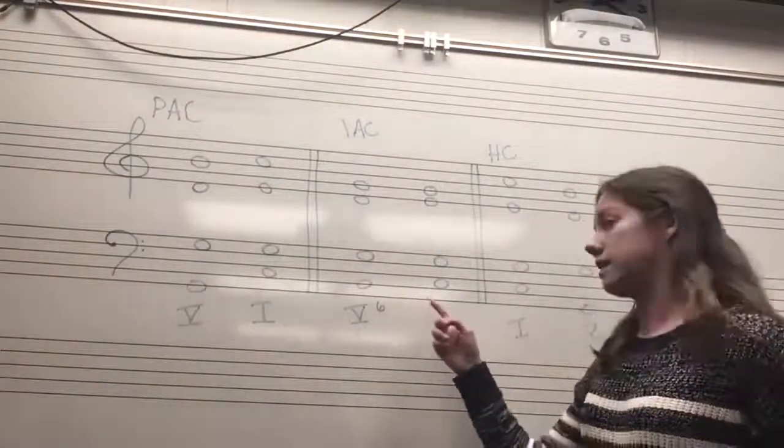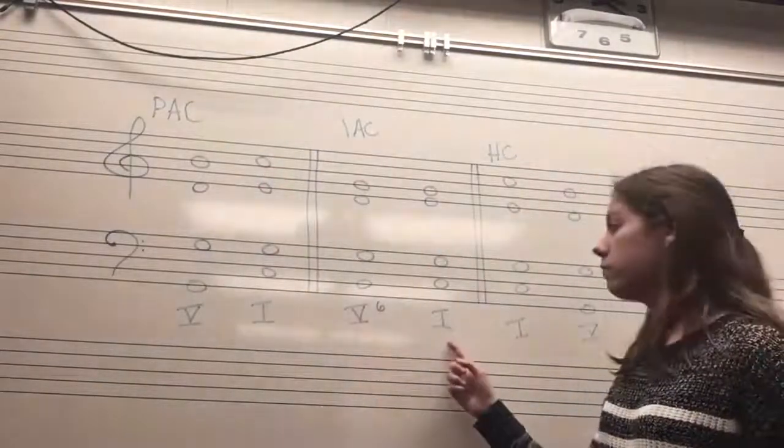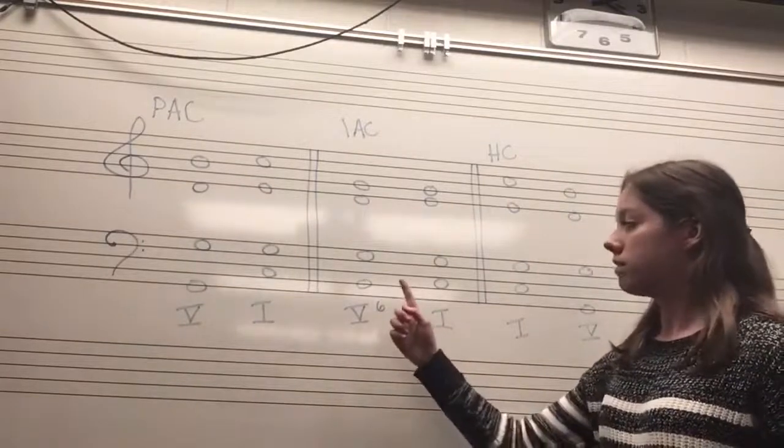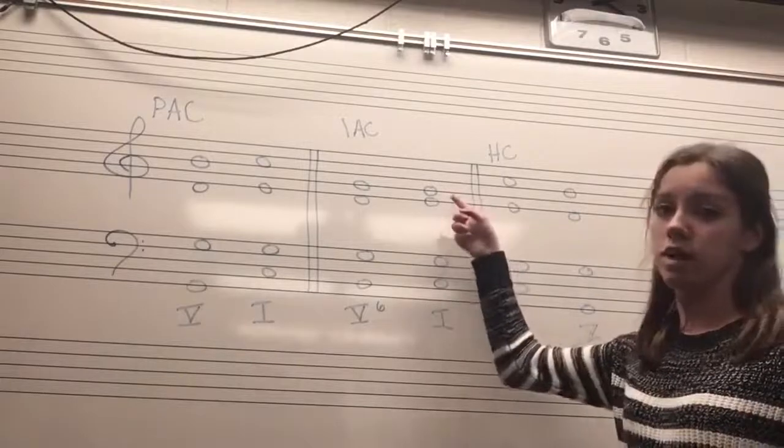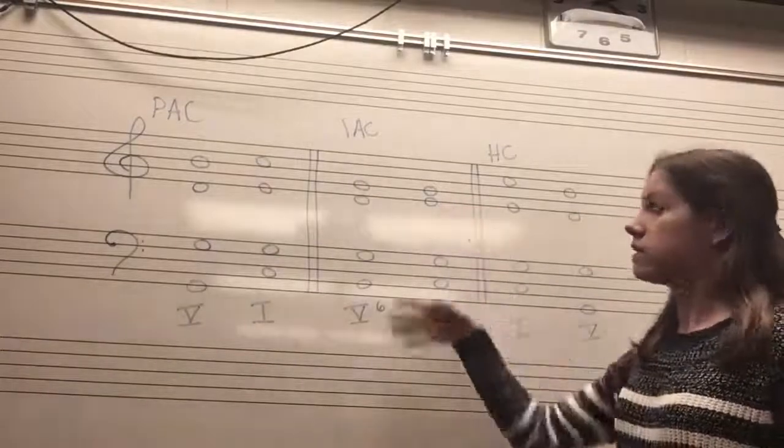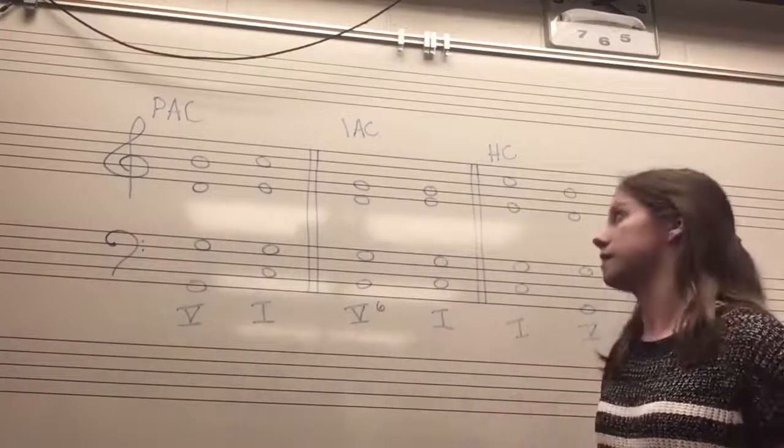To make an imperfect authentic cadence, you still have a V chord followed by a I chord, but either the V chord or the I chord is in an inversion, or the soprano ends on a note other than DO. If any of those things occur, then it is an imperfect authentic cadence.